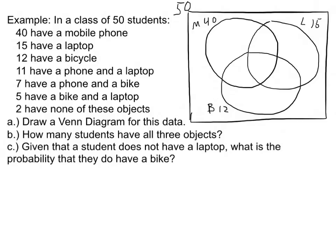11 of them have a phone and a laptop, so I put 11 in the phone-laptop intersection. 7 have a phone and a bike, so 7 goes in the phone-bike intersection. 5 have a bike and a laptop, so 5 goes in the bike-laptop intersection. And 2 students have none of these objects — those live in the space outside the entire diagram.